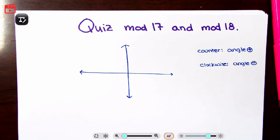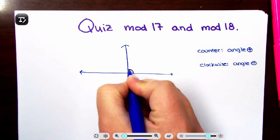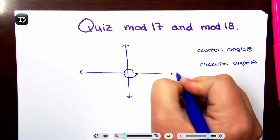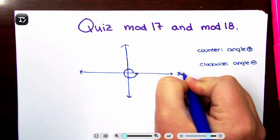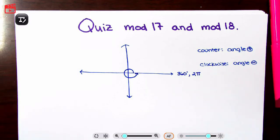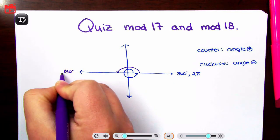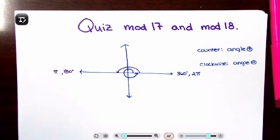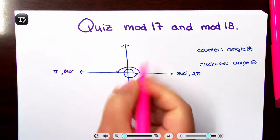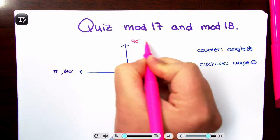We have revolution cycles, rotations — they're kind of synonyms for the same thing. If you go one full counterclockwise rotation, that would be 360 degrees or 2π. If you go half a rotation, that would be 180 degrees or just π. If you go a quarter of a rotation, that's going to be either 90 degrees or π/2.